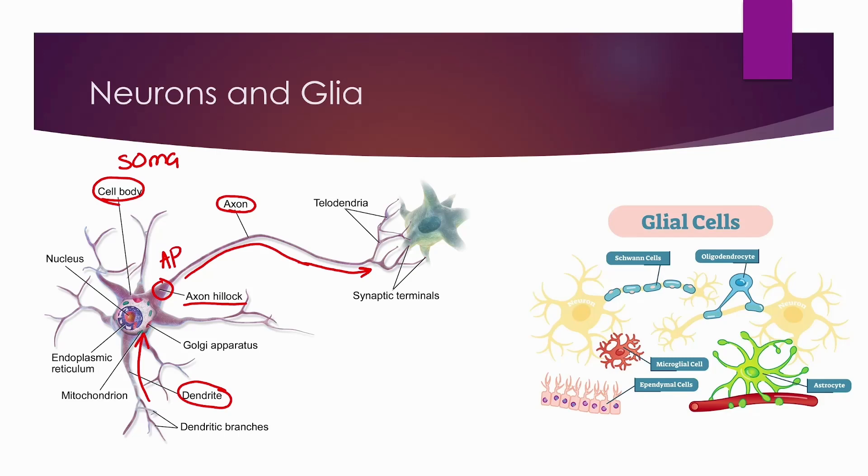Moving on, I would like to talk to you guys about glia. Glia are like the support cells of the nervous system. Everything they do is to support neurons and propagation of action potentials.